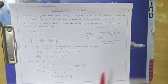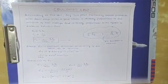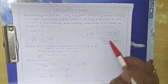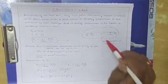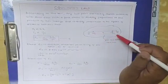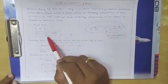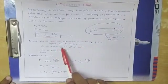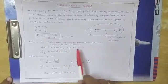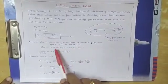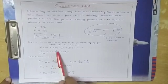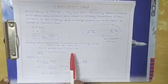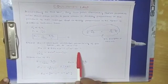Epsilon naught (ε₀) decides the magnitude of the force between the two charges, and it depends on the medium in which those two charges are placed. This ε₀ is called the absolute electrical permittivity of free space, air, or vacuum. It has a value of 8.854 × 10⁻¹² C² per N per m².